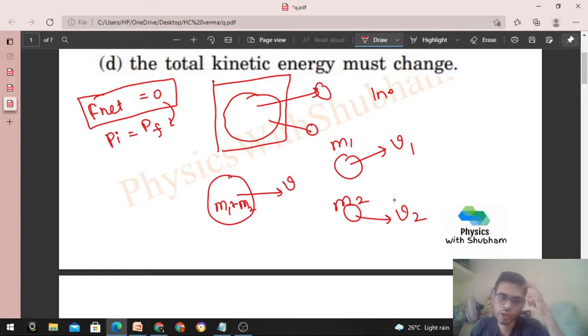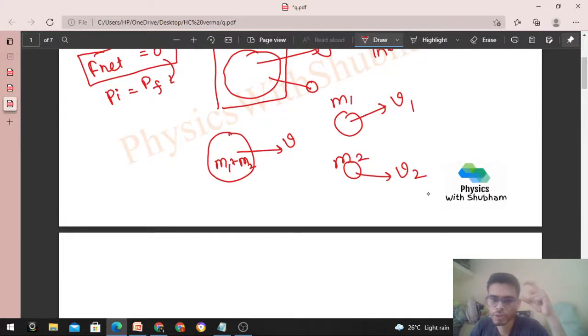So how can we analyze this? Look, if you see this in reverse mode, what will happen? In reverse mode it will look something like this - this was m1 and here was m2.